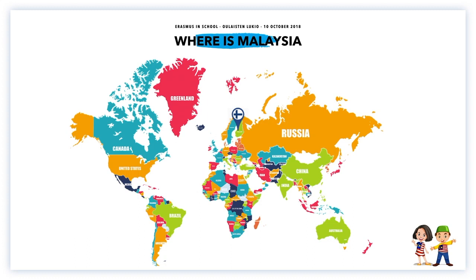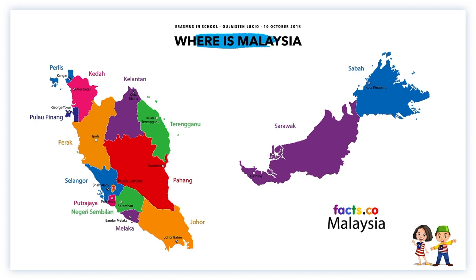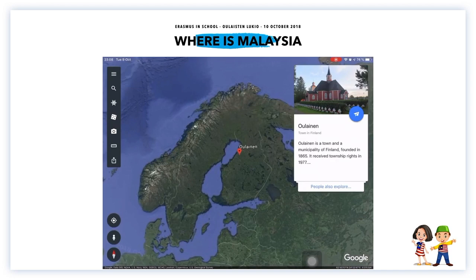We also took the opportunity to investigate how much the students knew about Malaysia by interacting with them and asking them to identify where Malaysia is located, discussing this a little bit. We then went in a bit more depth into the geography of Malaysia, covering physical geography as well as the people. This part has been customized from one school to another, and I prepared a comparison to give students perspective on how far Finland and Malaysia are from each other.